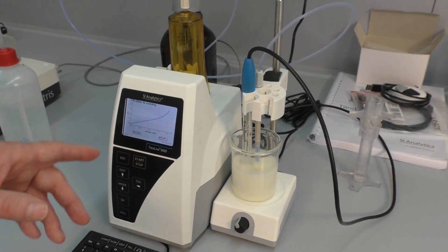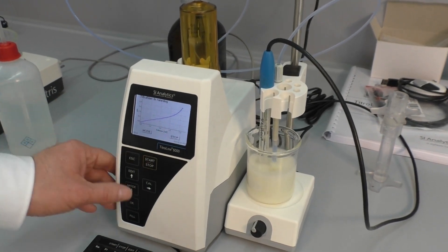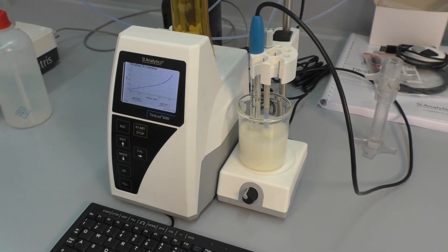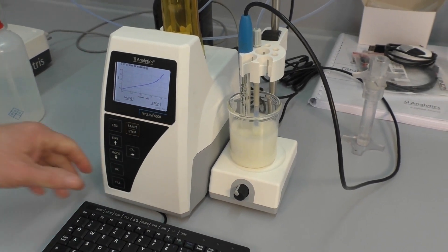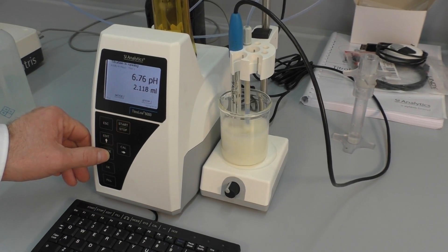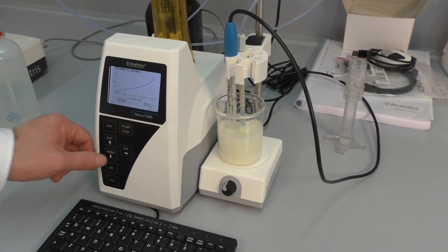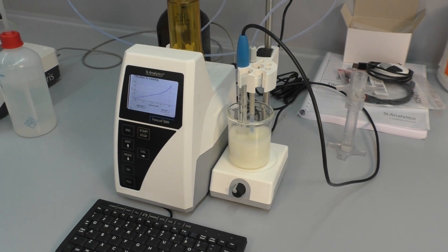At the end of the titration, you can see the pH is changing much quicker. And so the titrator stops the quick titration and changes to a more slower titration speed until the endpoint of 8.2 is reached.